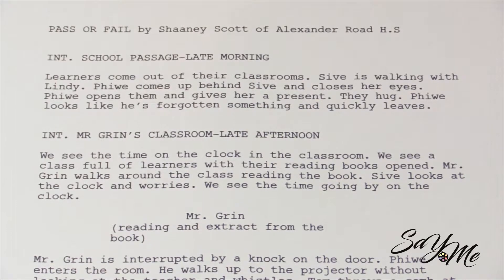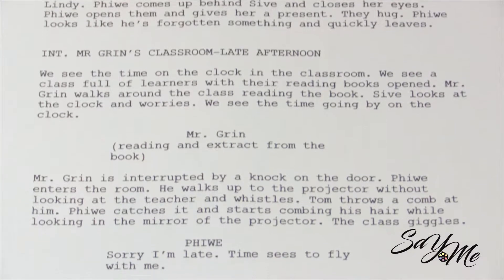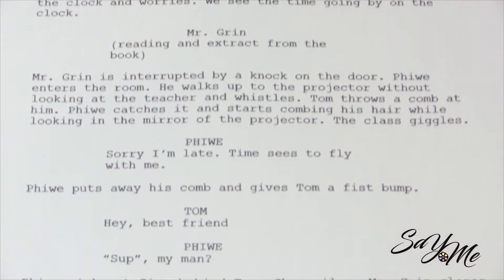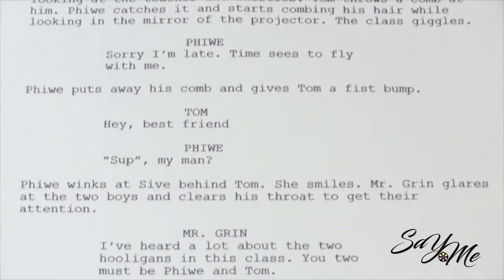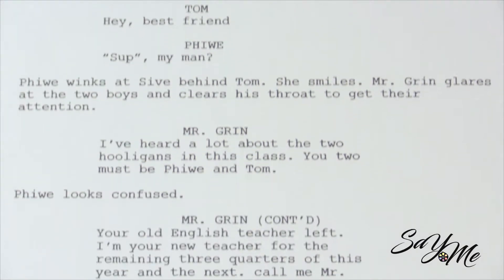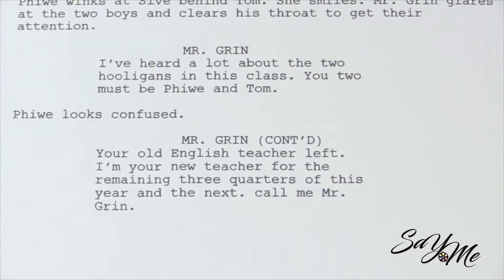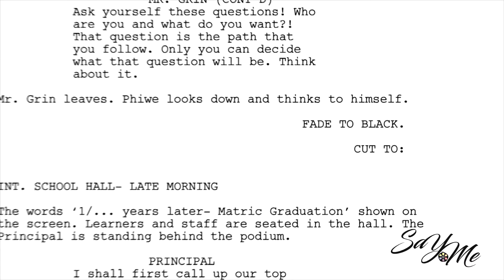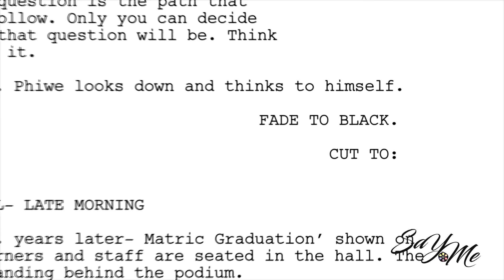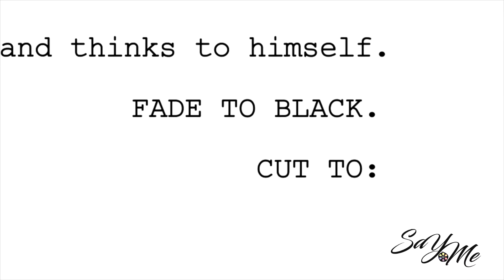Look at the screenplay examples in the next video to see how closely this timing lines up. You will also see the ideal positioning of scene headings, descriptions, action, character names, dialogue, and transitions. You do not need to include transition details in your screenplay unless you want a specific effect at that point, for example fade to black.